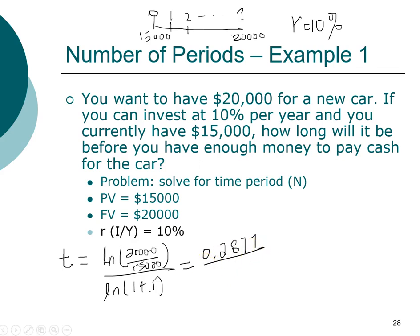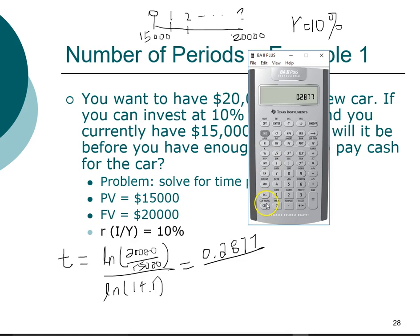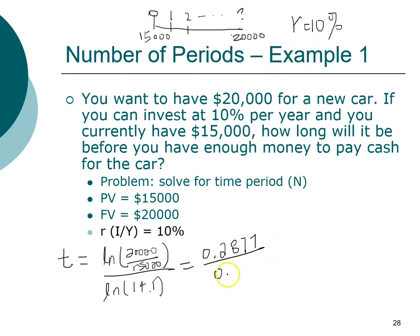For the denominator, we have 1 plus 10 percent, so that's 1 plus 0.1 or 1.1. We want to take the natural log of that, so that's 0.0953.